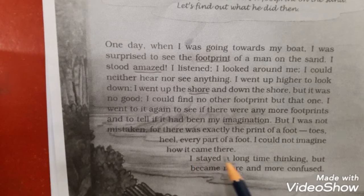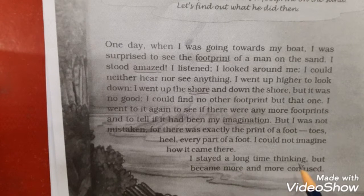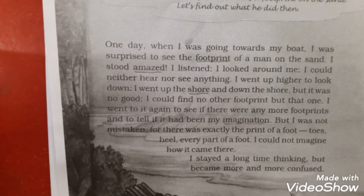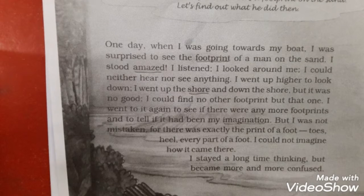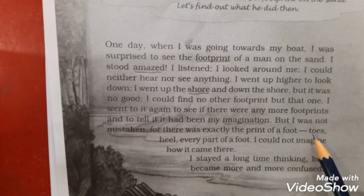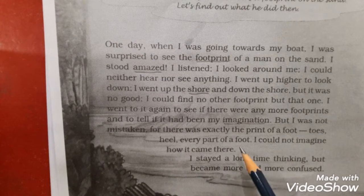But I was not mistaken, for there was exactly the footprint — the footprint of a foot: toes, heel, every part of a foot. I could not imagine how it came there. I stayed a long time thinking but became more and more confused. Robinson Crusoe saw a footprint which looked exactly like a human's footprint, with toes, heel, and foot.